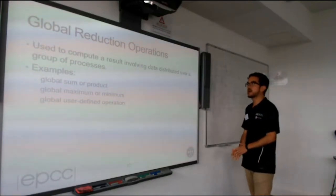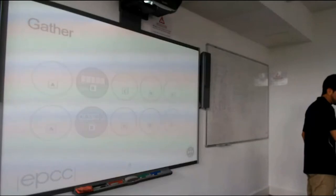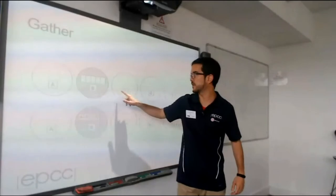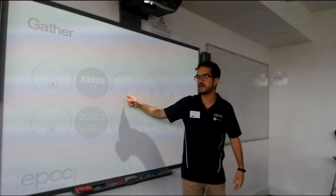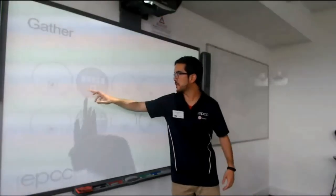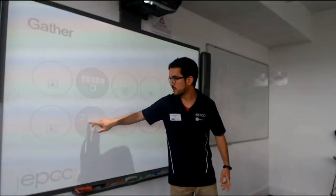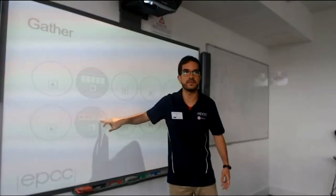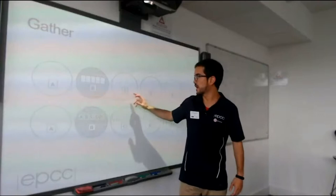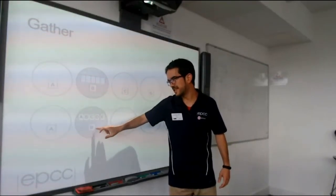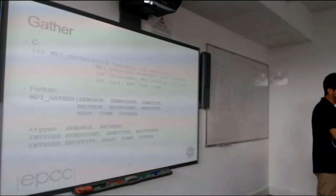Another kind of operation is called reduction. For example, if we want to get the sum of five elements, or in a global optimization problem find the minimum value across five processes. One way is to do a gather first and then find the minimum. But instead, we can do MPI_Reduce, which collects only the result of the operation — not all the elements — making it more efficient.